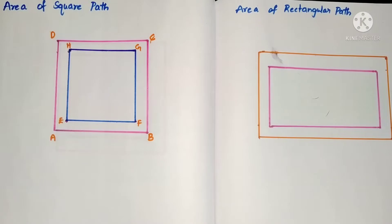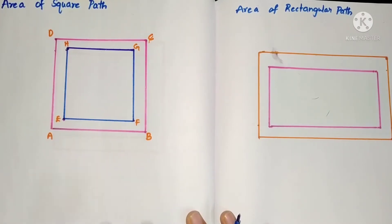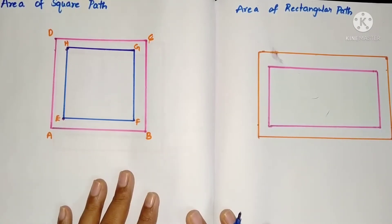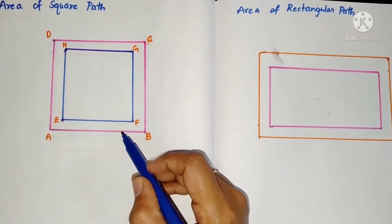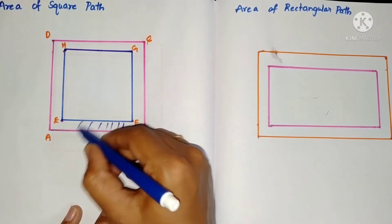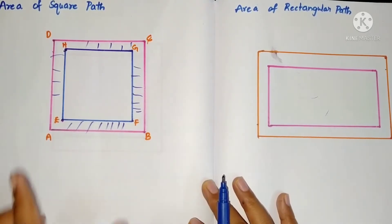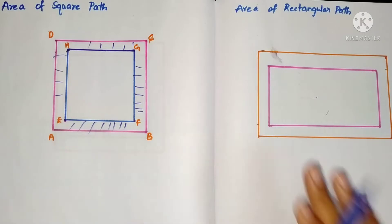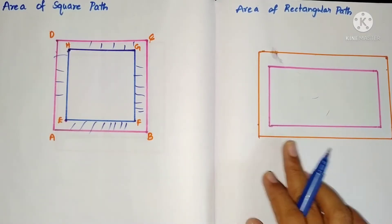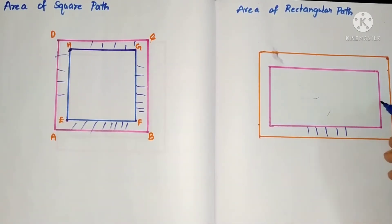Hello students, welcome to my channel. Today in this video we are going to see how to calculate the area of a path. These are very useful to solve the problems in exercise 11.2 for class 7. Here we have a square with another square inside — that space between them is the path. The area of the path equals area of outer square minus area of inner square. Similarly, for a rectangle, area of outer rectangle minus area of inner rectangle gives the area of the path.